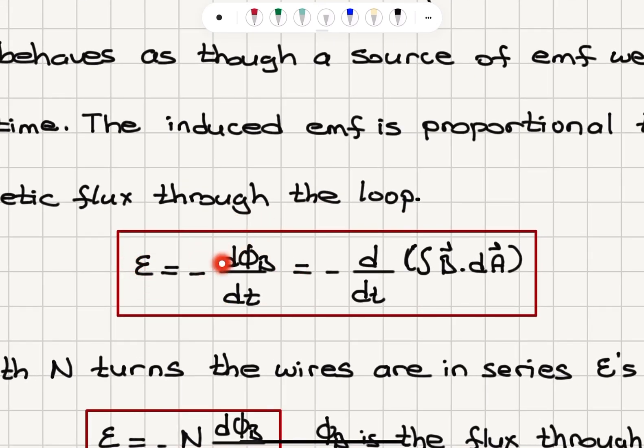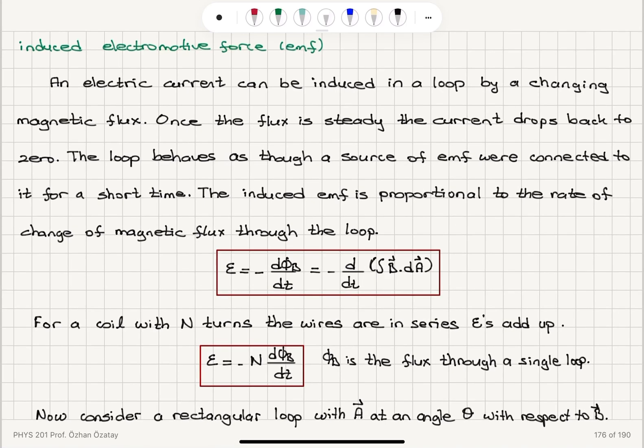Epsilon induced EMF is minus dΦ_B/dt, which is minus d/dt of integral B dot dA. It's minus the rate of change of the magnetic flux.